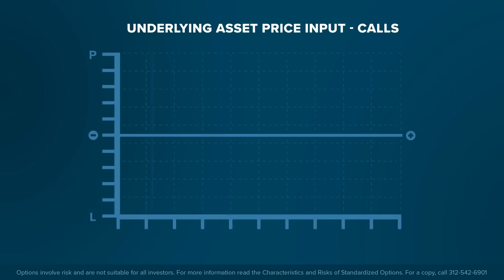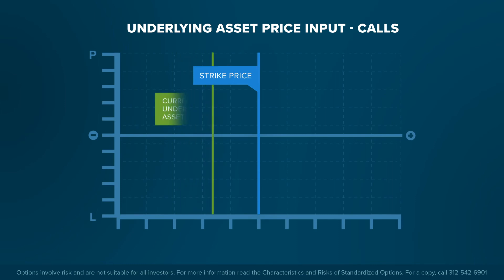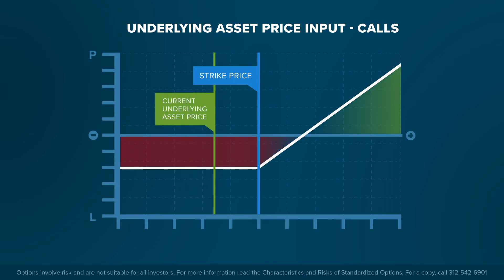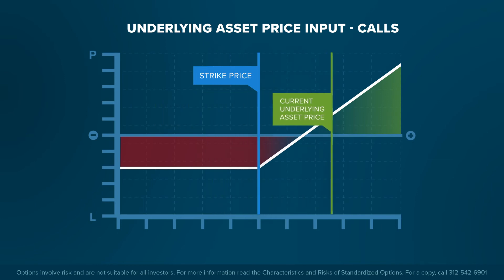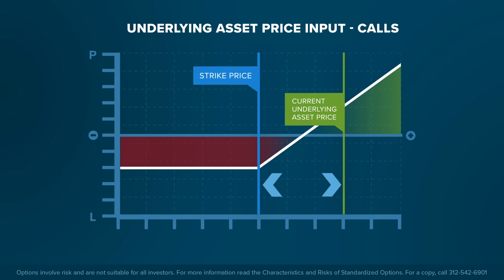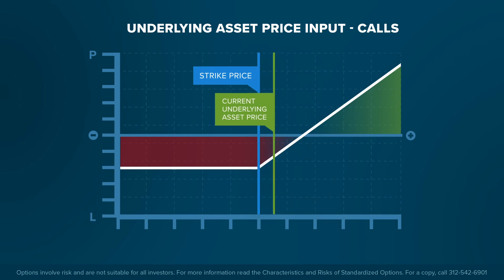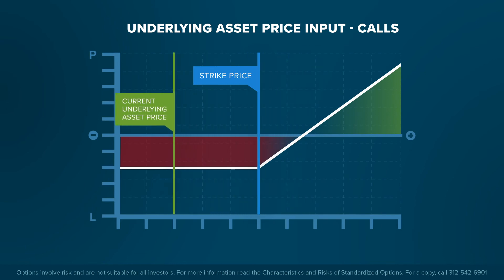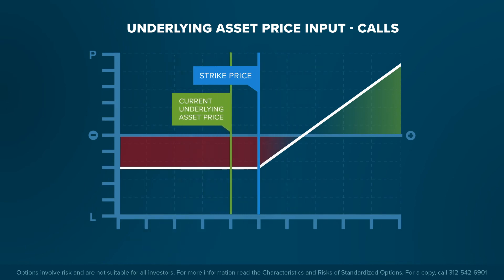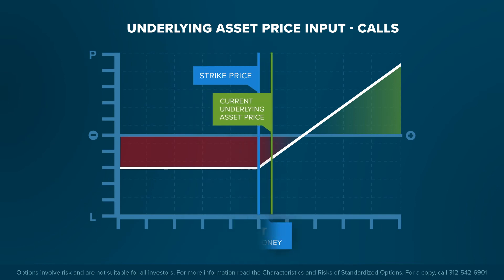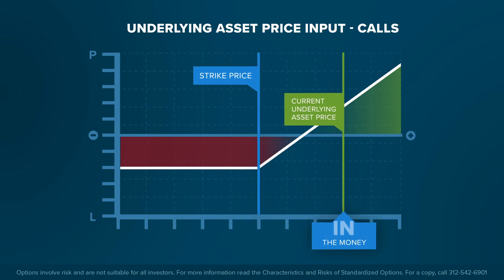The relationship between the strike price and the underlying asset will have a strong influence on the price of an option. For a call option, the higher the underlying asset price in relation to the strike price, the higher the option premium. The payout at exercise of the option is the difference between the underlying asset price and the strike price. Options with an underlying asset price below the strike are out of the money, at the strike are at the money, and above the strike are in the money.